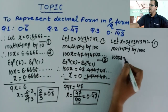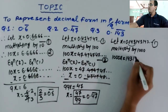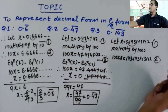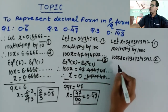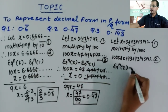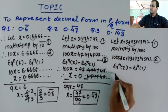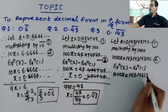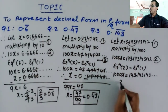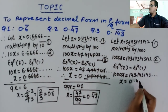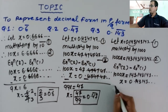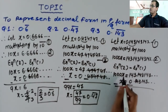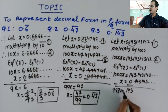Multiplying by 1000, the decimal shifts after 3 digits, giving 1000x is equal to 143.143143 and so on. Consider this as equation 2. Now, equation 2 minus equation 1: 1000x minus x gives 999x, and the recurring parts cancel, leaving 143. So 999x equals 143.